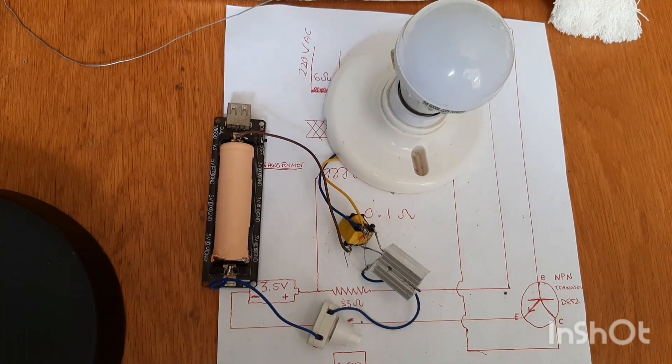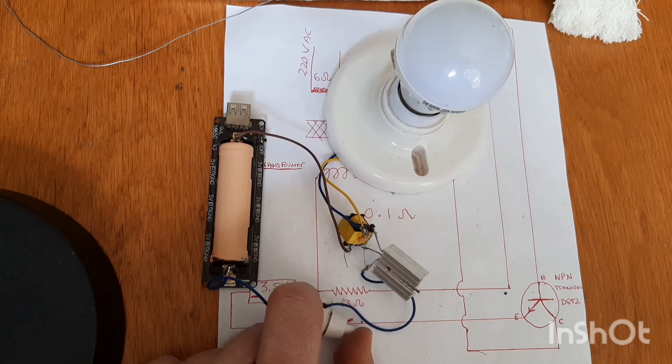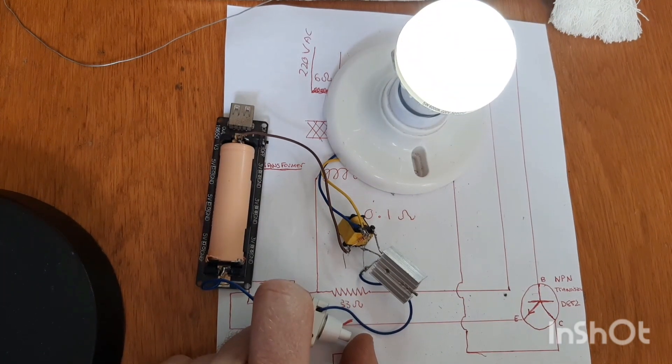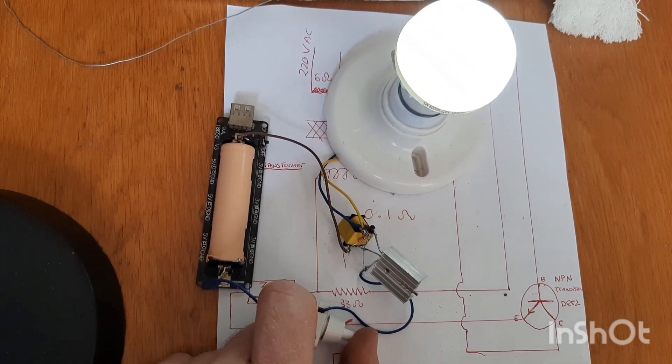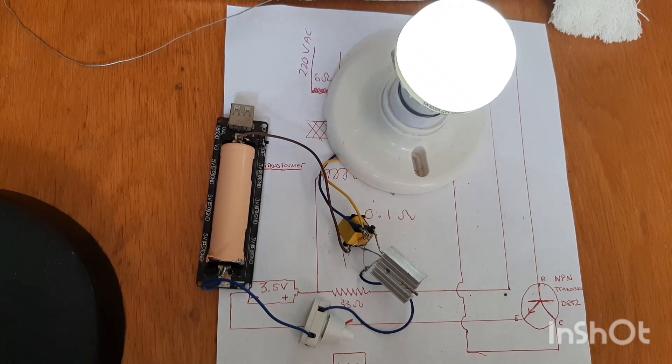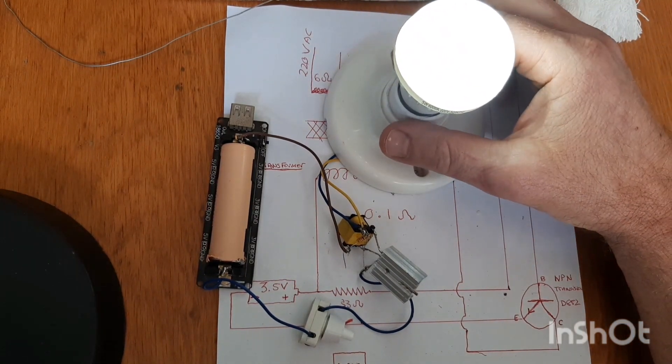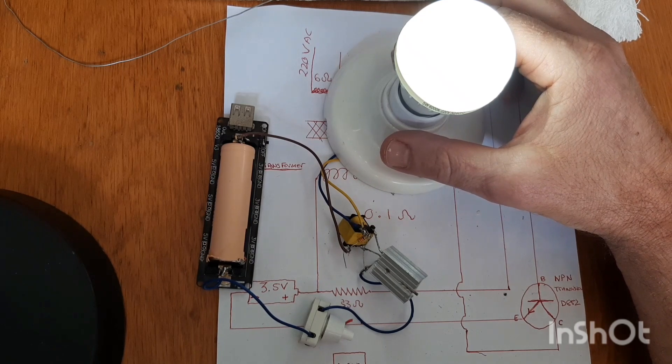Now that we've got everything soldered into position, let's give this a test. And there you have it. A DC to AC inverter. It doesn't quite measure 220 volts, but it still converts DC to AC.